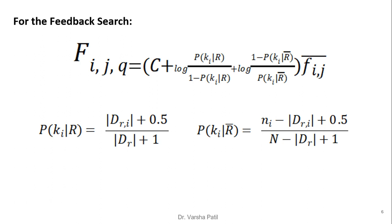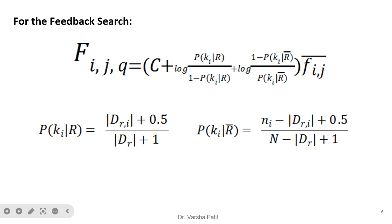For feedback search, we modify the formula for f_ijq. To set the values of P(k_i | R) and P(k_i | R̄), we use a function where N is the total number of documents, dr is the number of relevant documents, dr_i is the number of relevant documents containing keyword i, and n_i is the number of documents in the entire collection containing keyword i. This measure was already covered in the probabilistic model, so P(k_i | R) and P(k_i | R̄) do not need further explanation here.